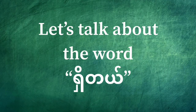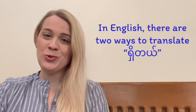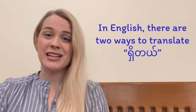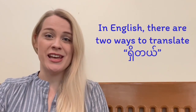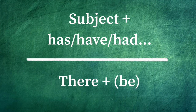Let's talk about the word 'she-de.' In English there are two ways to translate 'she-de.' You can use subject plus has or have, or any variant of the verb to have.